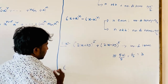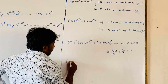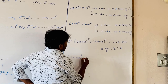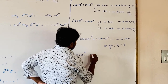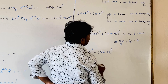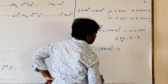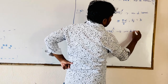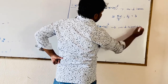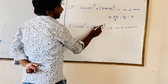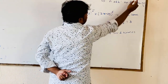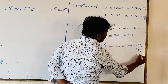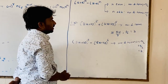Now observe the expansion of (5x + 2y)^6 minus (5x - 2y)^6. How many terms does it contain? Here n is 6, which is even. For the difference expansion when n is even, the number of terms is n/2 = 6/2 = 3. So it contains 3 terms.